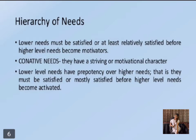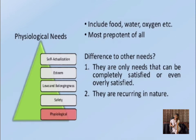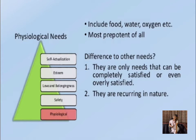Lower-level needs have prepotency over higher-level needs — that is, they must be satisfied or mostly satisfied before a higher-level need becomes activated. For example, anyone motivated by esteem or self-actualization must have previously satisfied needs for food and safety. The most basic needs of any person are physiological needs, including food, water, oxygen, maintenance of body temperature, and so on. Physiological needs are the most prepotent of all. Perfectly hungry people are motivated to eat, not to make friends or gain self-esteem. And as long as these needs remain unsatisfied, their primary motivation is to obtain something to eat. As Maslow 1970 said, 'It is quite true that man lives by bread alone when there is no bread.'